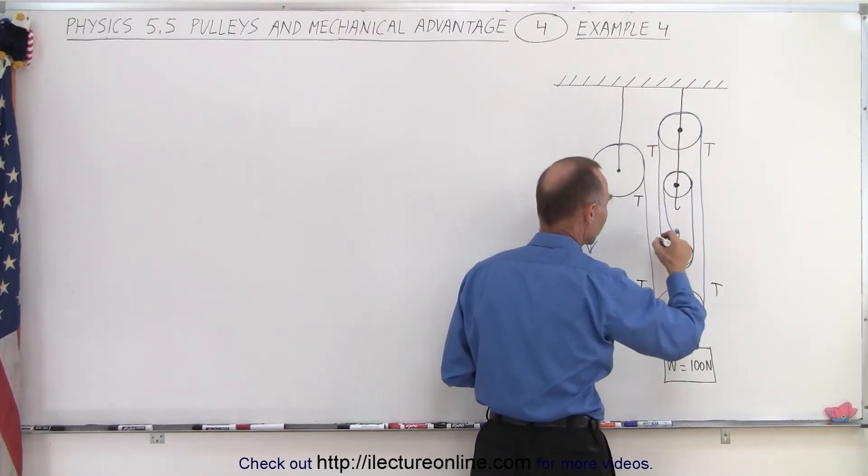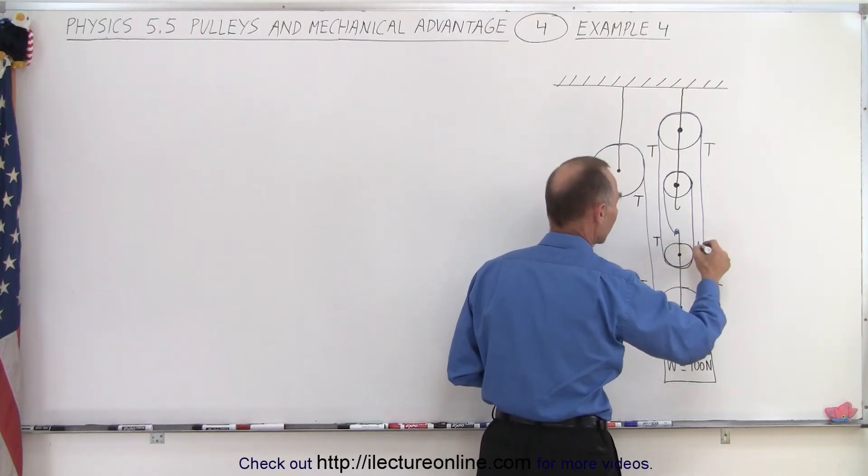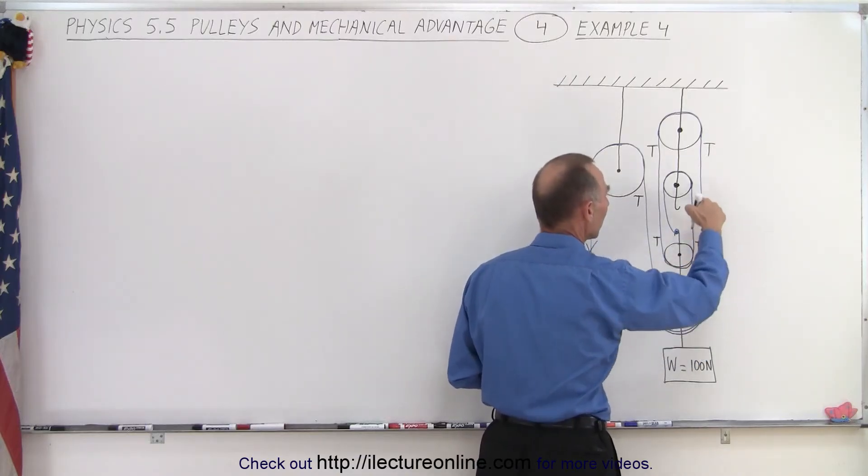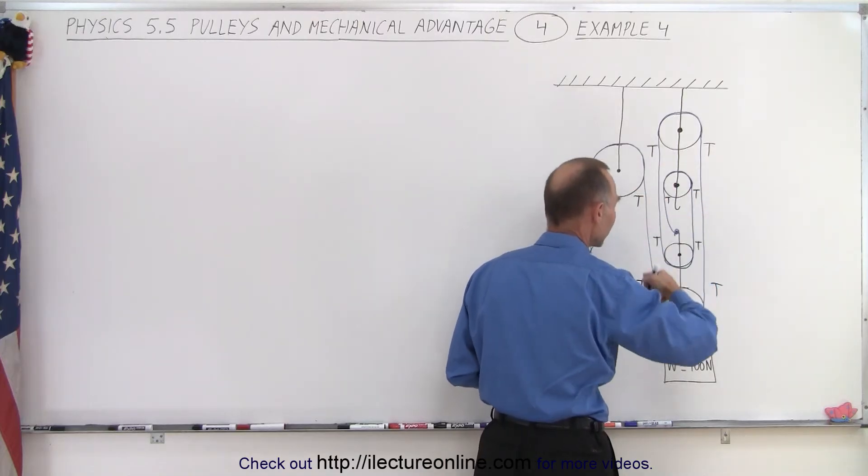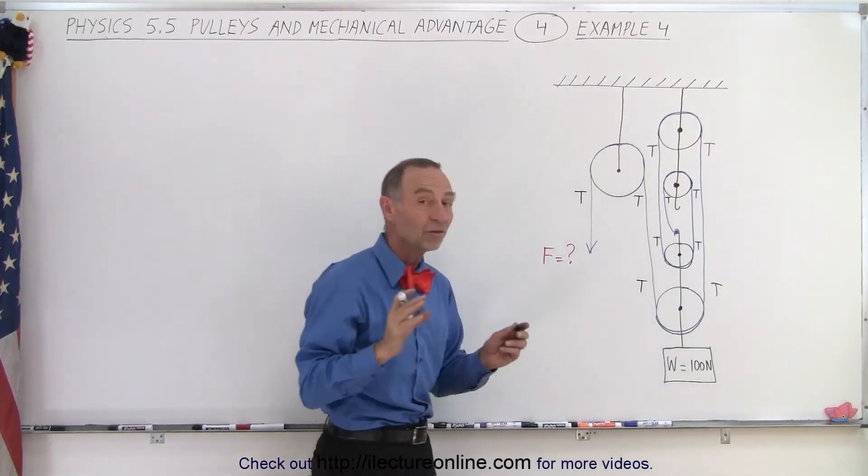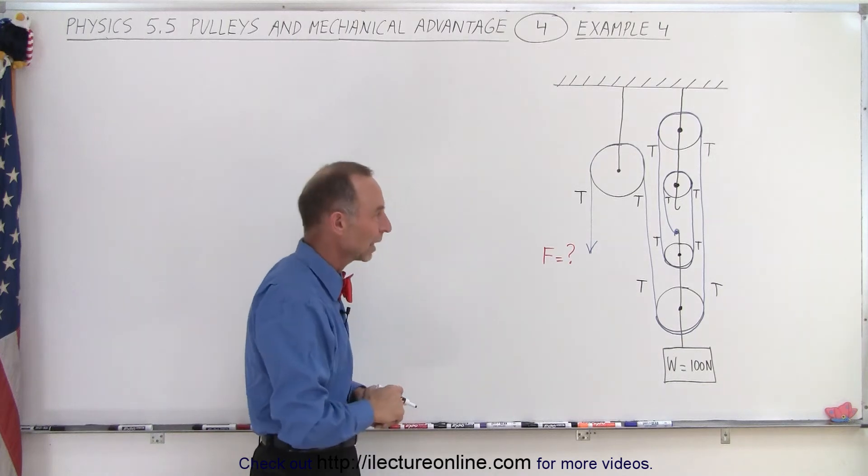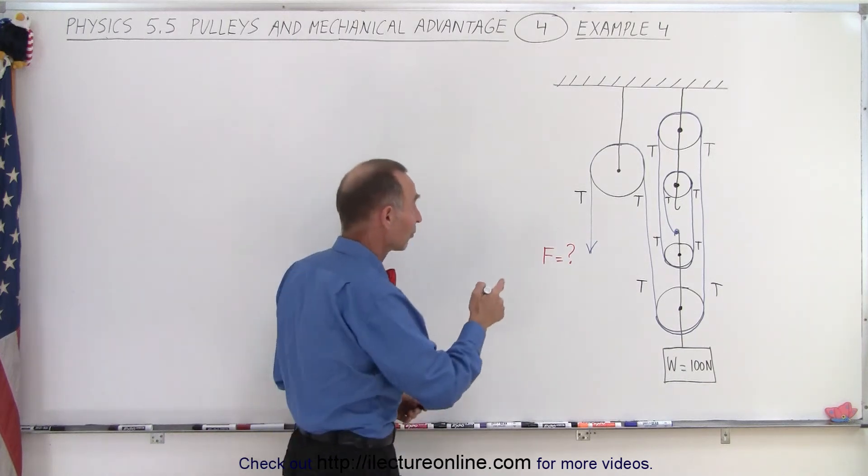Then we come around here so we have the tension T on this side that means we have tension T on the other side, same again. Come around here, tension T here and that must be the same as the tension T, and up here the tension T must be equal to the tension T. So we can see that the tension everywhere on the string is exactly the same.